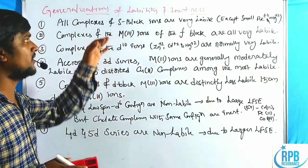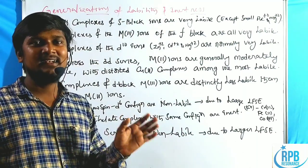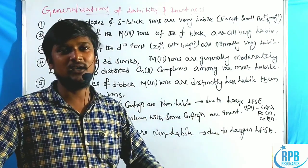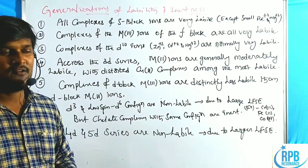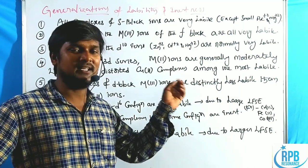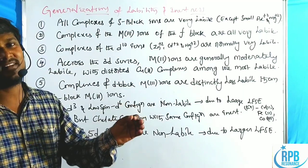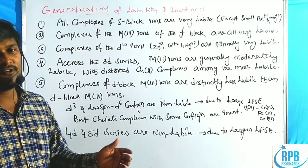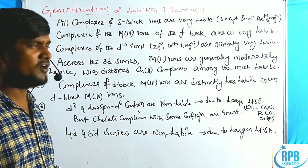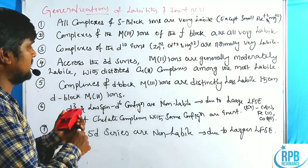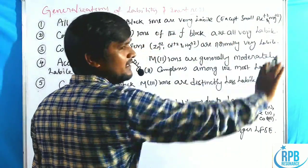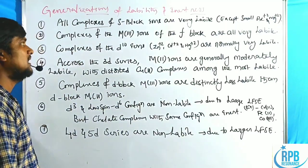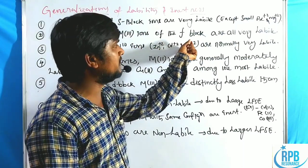Now I will add some generalization points regarding lability and inertness. Previously I gave four points: D0, D1, D2 are labile; if electron enters Eg orbital it is labile, except D8 which is inert and explained by CFAE not VBT; D3 with +3 or more is inert, less than +3 is labile; D4, D5, D6 low spin are inert. Now generalization point 1: all complexes of S-block elements are very labile, except small-sized Be2+ and Mg2+. Point 2: complexes with M3+ ions of F-block elements are very labile — lanthanoids +3 and actinoids +3 are very labile.